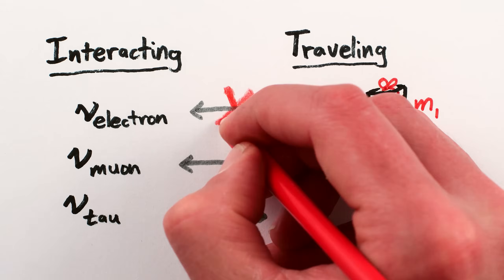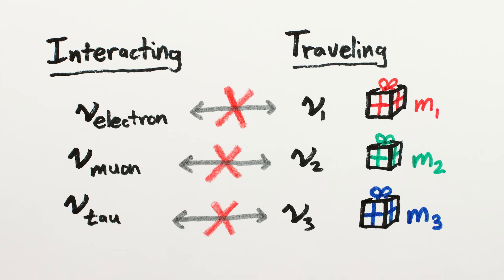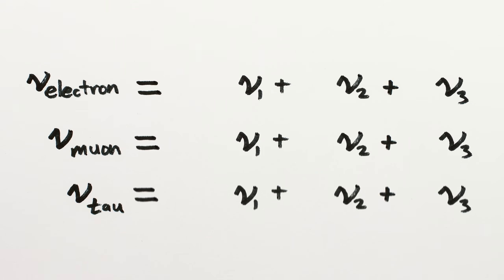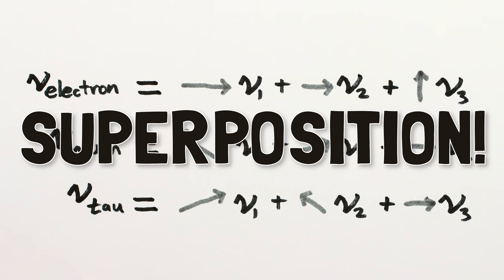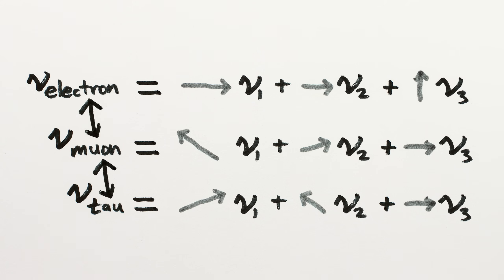But these two sets of identities don't match up in a one-to-one correspondence. Instead, each of the interaction identities is actually a unique mix of the three traveling identities. And this weirdness allows neutrinos to change their identities.